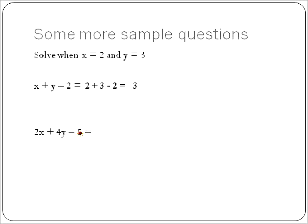We're going to do this one, which is kind of the most complicated thing we'll see here. We substitute 2 in for x and 3 in for y, so we have 2 times 2 plus 4 times 3. We can do both multiplications at the same time: 2 times 2 is 4, and 4 times 3 is 12. Then we solve the minus 5, and add them all together: 4 plus 12 is 16, minus 5 is equal to 11.